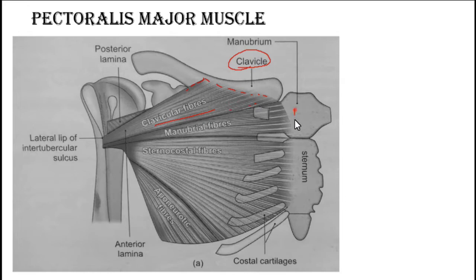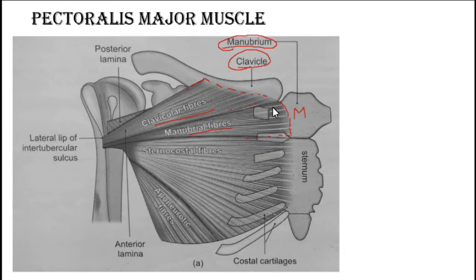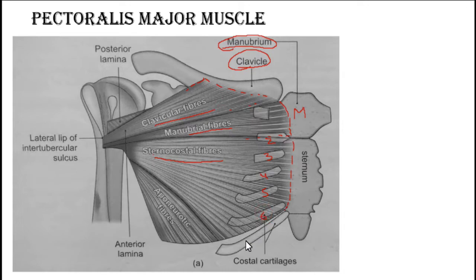Then we have the manubrium sterni, so the manubrial fibers will take origin from the anterior surface of the manubrium. Next we have the sternum — the sternocostal fibers will take origin from the anterior surface of the sternum as well as the costal cartilages. These are the sternocostal fibers of the second, third, fourth, fifth, and sixth costal cartilage.